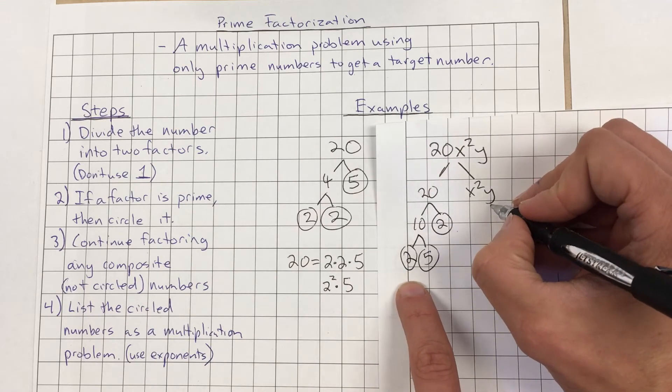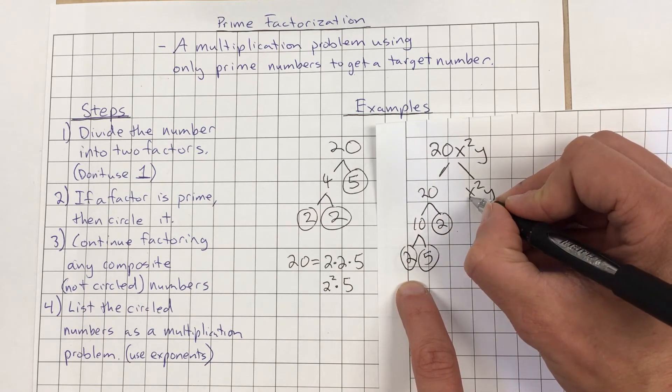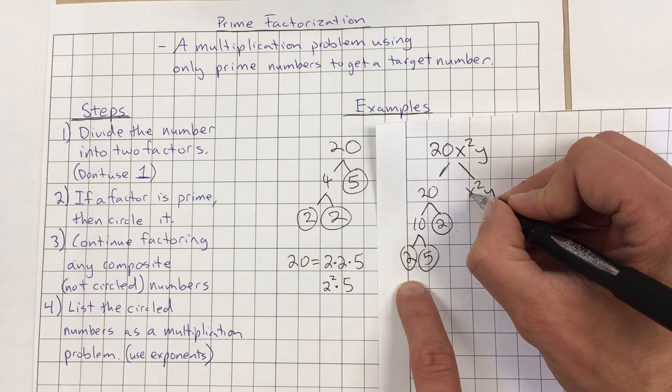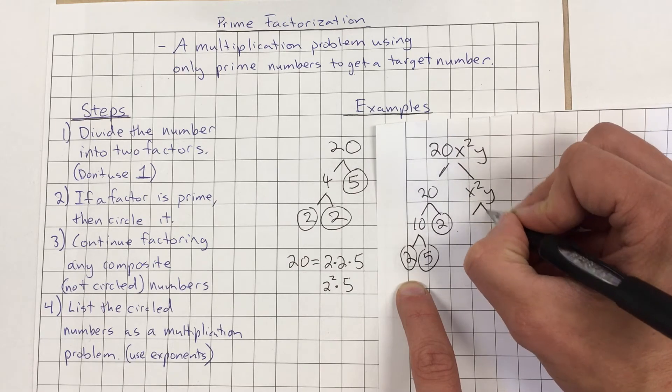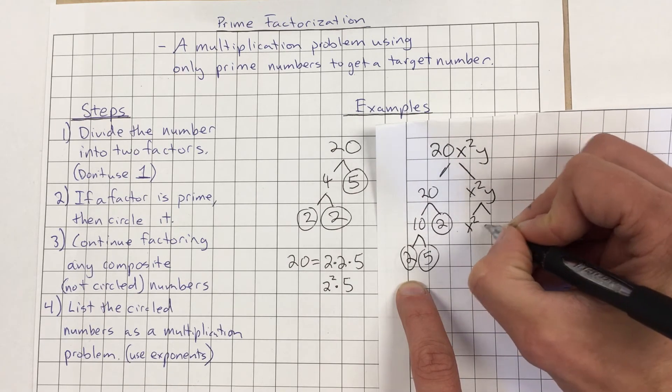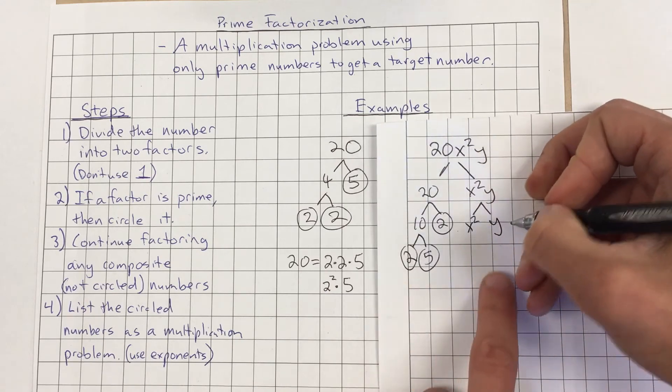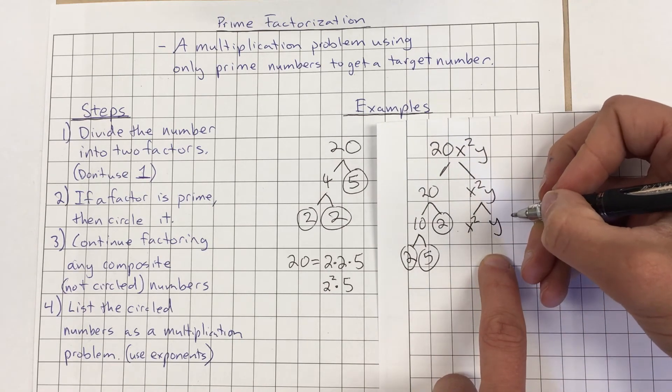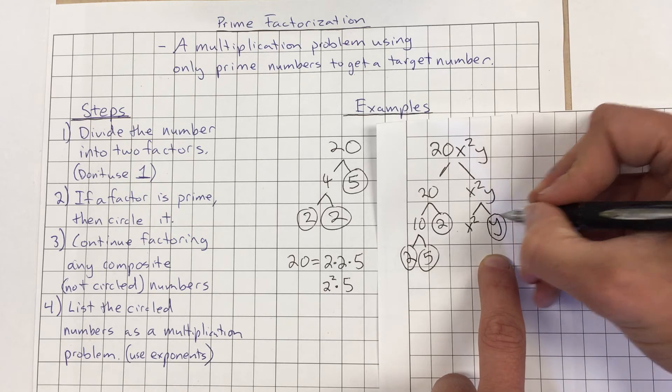If we have variables, we're just going to kind of split them up as best we can. x squared y means x squared times y. So I could split that up into x squared and y. Now I cannot factor y because I don't know what it equals. So I'm just going to circle that and say that's my end point.